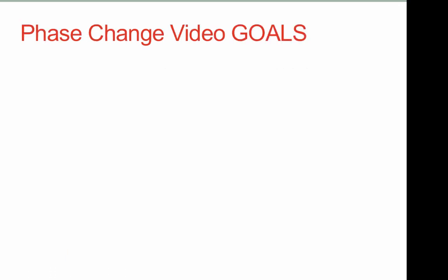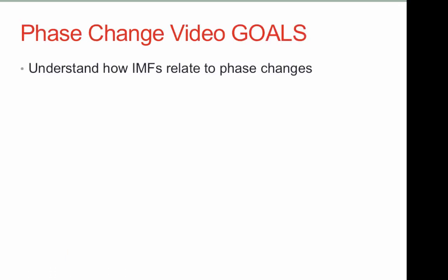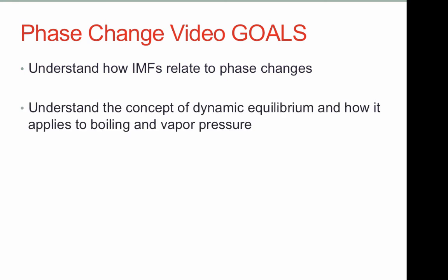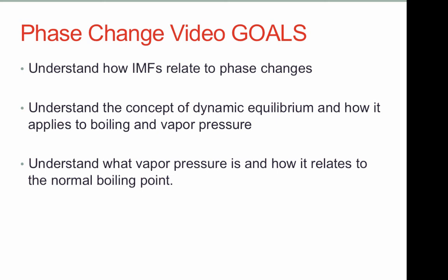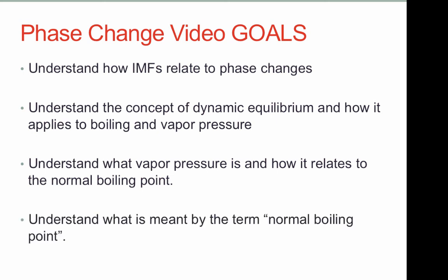That brings us to the end of this video. Let's review our goals. First, we looked at how intermolecular forces relate to phase changes — stronger IMFs require more energy for an endothermic phase change. Then we looked at dynamic equilibrium, when the rate of evaporation equals the rate of condensation. Then we looked at vapor pressure — the pressure exerted by the vapor phase of a liquid at equilibrium — and how it relates to normal boiling point, which is the point at which vapor pressure equals atmospheric pressure.